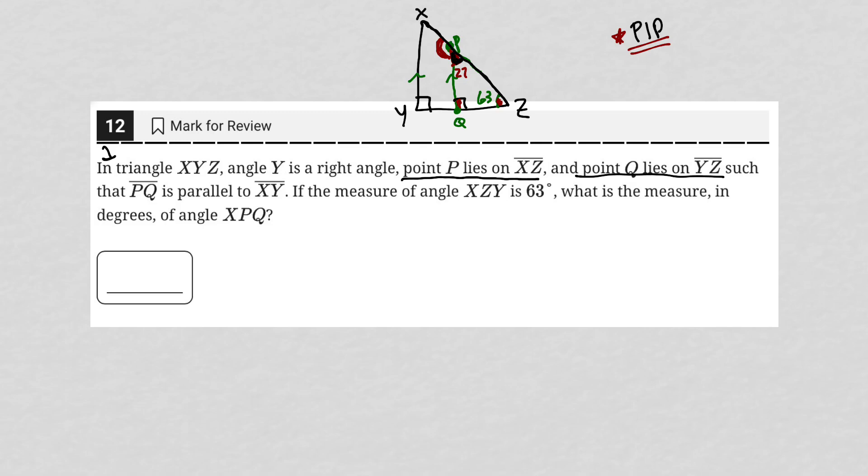the angle here that I'm not filling in with black, plus this angle here in question, must add up to 180. So we're just saying, well, 180 minus 27 is 153. So therefore, that angle XPQ must be 153 degrees.